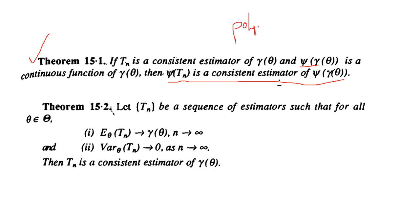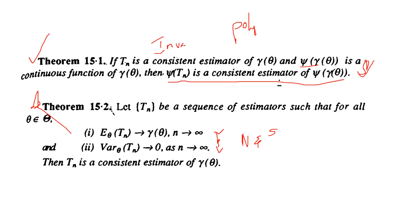The second important result: let Tₙ be a sequence of estimators such that for all θ ∈ Θ, E[Tₙ] = γ(θ) (unbiasedness), and the variance of Tₙ tends to 0 as n tends to infinity. Then Tₙ is a consistent estimator. This is the necessary and sufficient condition for consistency, also called the invariance property.